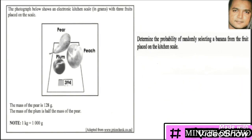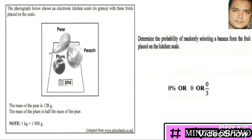To determine the probability of randomly selecting a banana from the fruit placed on the kitchen scale: clearly there are no bananas on the kitchen scale, so it would be zero bananas from all the fruit there, giving zero over three. We must be mindful of how the examiner questions us — if a percentage probability is asked, the answer would be zero percent.